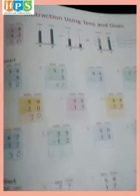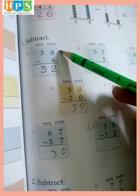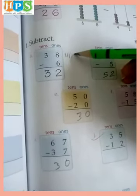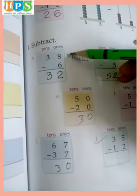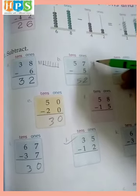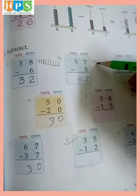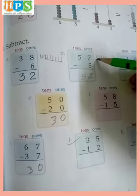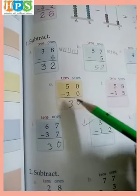Page number 63: subtraction using 10s and 1s. 1s and 10s. 8 minus 6: we draw 8 standing lines — 1, 2, 3, 4, 5, 6, 7, 8 — and cut 4 lines. 5, 2, 9. The answer is 2. And 5, 5, 10, and 240, 0.